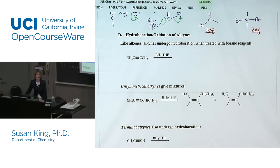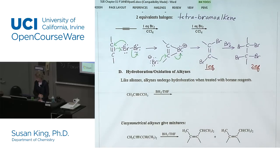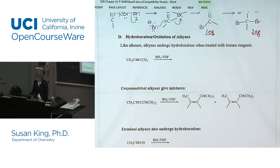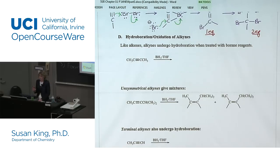We're going to end chapter 11 with hydroboration and oxidation of alkynes. Like alkenes, alkynes undergo hydroboration when treated with borane reagents. There are three different borane reagents you will see: BH₃·THF, 9-BBN which was introduced in chapter 10, or disiamylborane, which is similar to 9-BBN in that it's more bulky than BH₃. You tend to get better results with disiamylborane for alkynes.